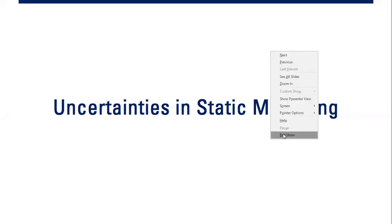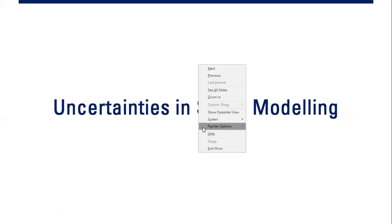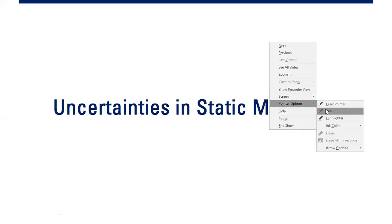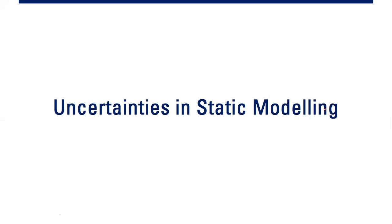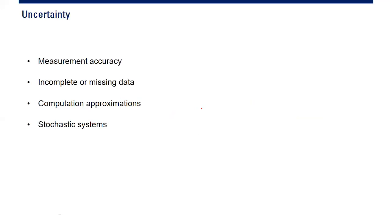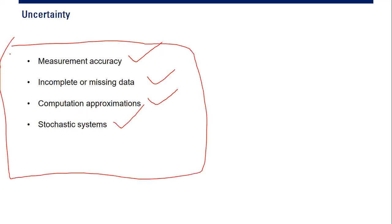We will continue to the next topic: uncertainties in static modeling. We have talked about the basic explanation of the geological model or static model, and then upscaling. Now we discuss uncertainty in static modeling. There are many sources of uncertainty: measurement inaccuracy, incomplete or missing data, computation approximation, and stochastic or probabilistic systems.